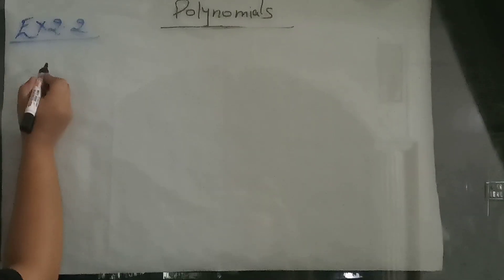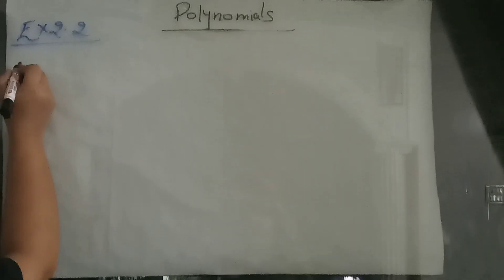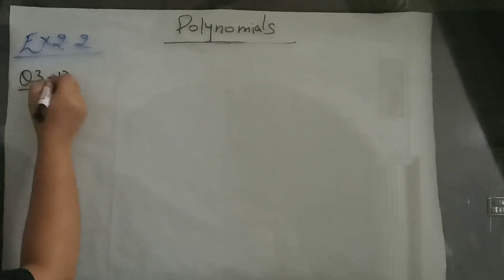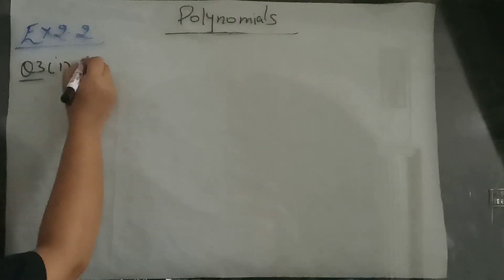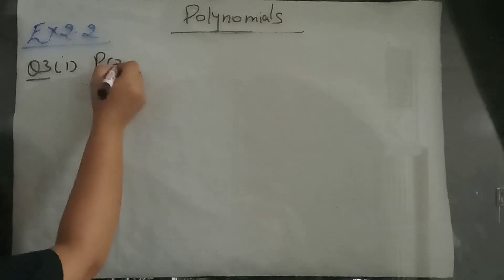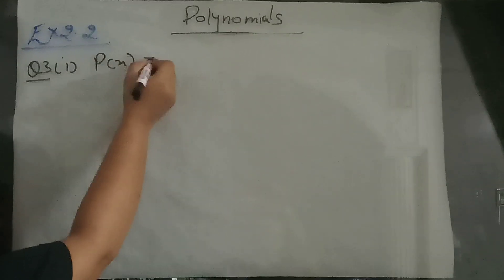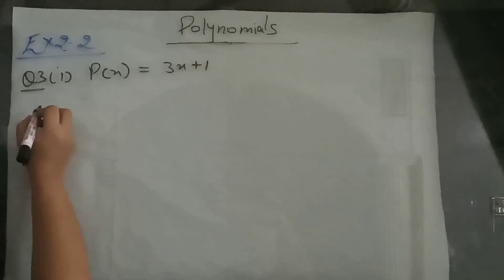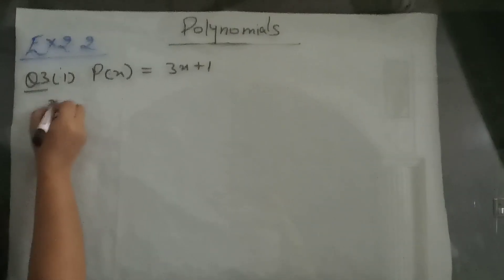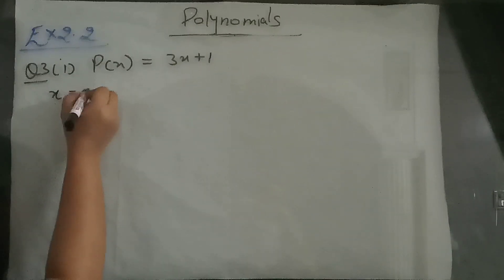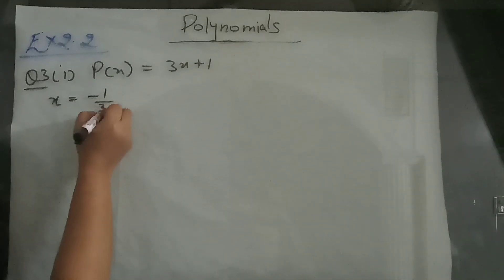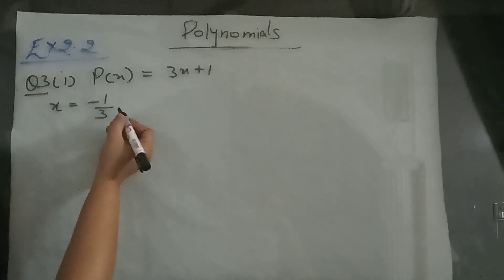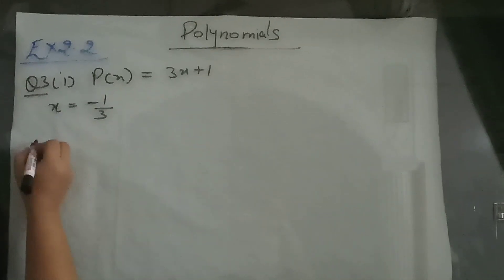Exercise 2.2, question number 3, first part. p of x is equal to 3x plus 1, where x is equal to minus 1 by 3. We have to verify whether they are the zeros of the polynomial or not.